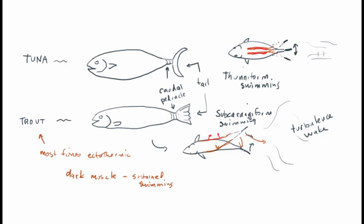Simply by swimming through its world, a tuna generates a lot of body heat internally and maintains an elevated body temperature compared to its neighbors. This means that prey items like sardines and squid are essentially moving in slow motion relative to the tuna. The tuna moves with great efficiency due to thuniform swimming and little turbulence wake, while also being smarter, faster, and stronger than animals operating at lower body temperatures. Unlike mammals and birds, the tuna doesn't need to dedicate a large portion of its energetic budget specifically to maintaining elevated body temperature.